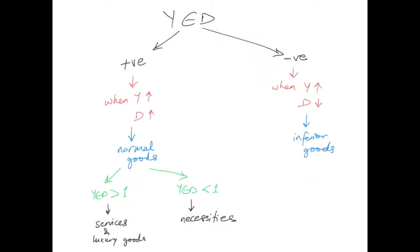When you calculate income elasticity of demand, you could end up with a positive value or a negative value. A positive value happens when, as income increases, demand also increases. This happens in the case of normal goods — most goods are normal goods. When income increases, demand will also increase. If income elasticity of demand is greater than one, this will usually be the case of services and luxury goods. If income elasticity is less than one, this will be the case of necessities.